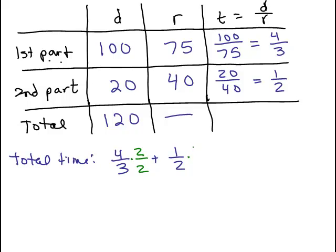Second fraction by 3 over 3 and that gives us 8 sixths plus 3 sixths, right? So if we could do that in your head, 8 plus 3 is 11 sixths.